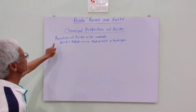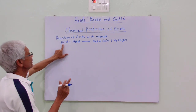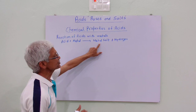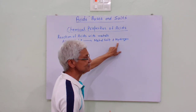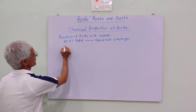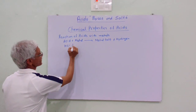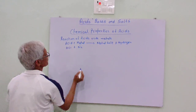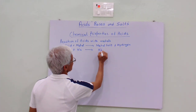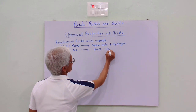First, reaction of acids with metals. Acid plus metal gives metal salt and hydrogen gas is liberated. Let us see. We take any acid like HCl and we take any metal like sodium. It forms NaCl plus H₂.